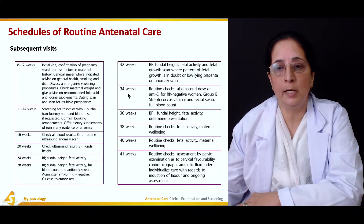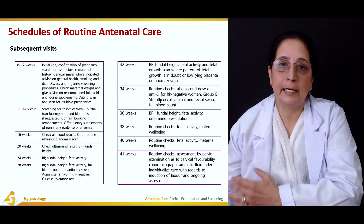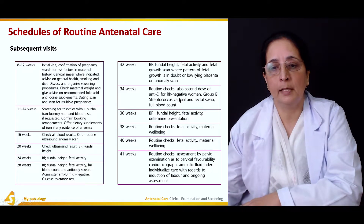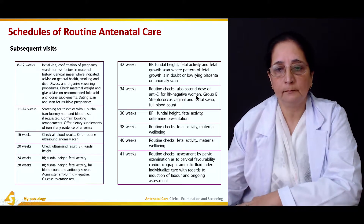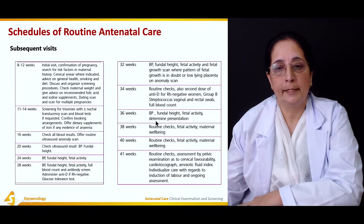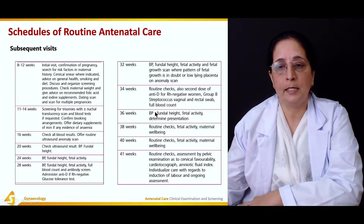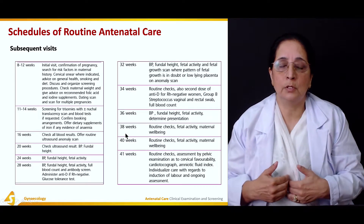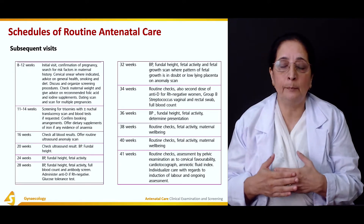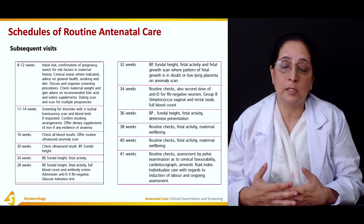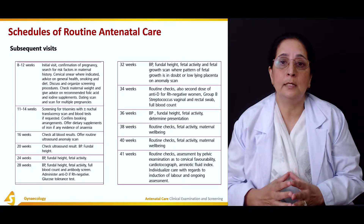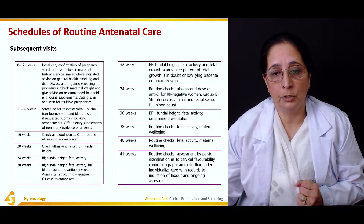At 34 weeks, routine checks are repeated and a second dose of anti-D is given if the pregnant woman is Rh negative. Group B streptococcus screening is done by rectal and vaginal swab. At 36 weeks, blood pressure, fundal height, fetal activity, and fetal presentation are determined. As delivery approaches, each weekly visit should include blood pressure, blood glucose levels, fetal movements, measurements, presentation, and lie of the baby.